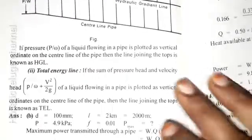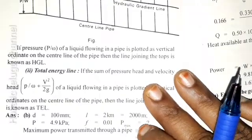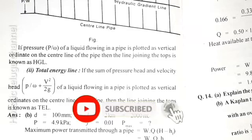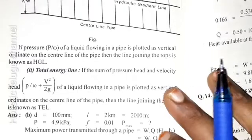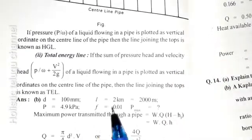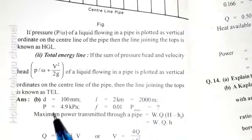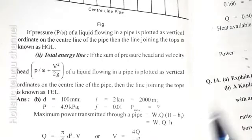Next problem: find the maximum power transmitted through a pipe of 100 mm diameter and 2 km long. The supply head is 4.9 kPa. Take F = 0.01. Diameter is 100 mm, L = 2 km. We need to find P_max — maximum power transmitted = W × Q × H.